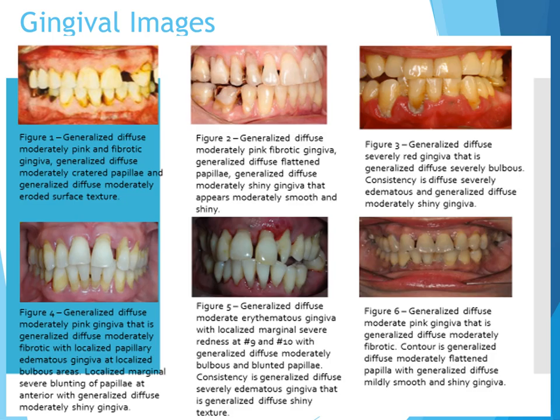Localized marginal severe blunting of papilla at anterior with generalized diffuse, moderately shiny gingiva. In figure five, we see generalized diffuse, moderate erythematous gingiva with localized marginal severe redness at number 9 and 10, with generalized diffuse, moderately bulbous and blunted papilla. Consistency is generalized diffuse, severely edematous gingiva with generalized diffuse, shiny texture.